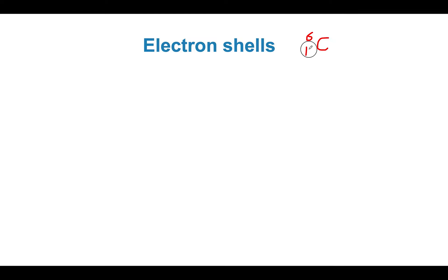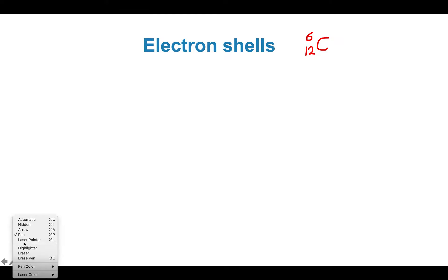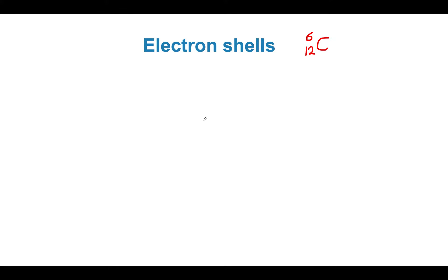The atomic mass, rounding up, is 12. Carbon is going to have a nucleus in which there are 6 protons.